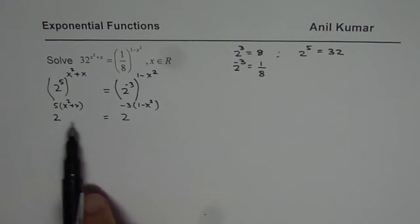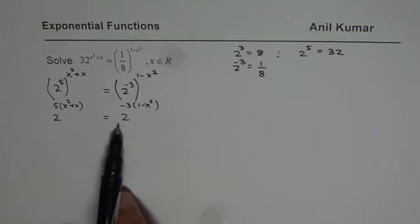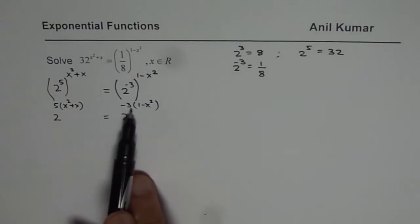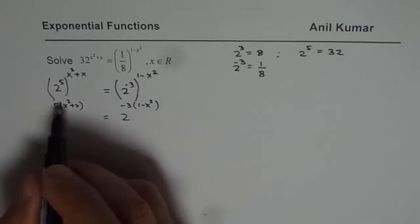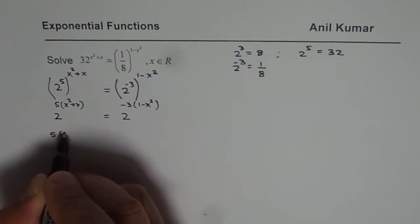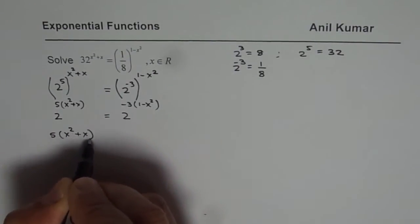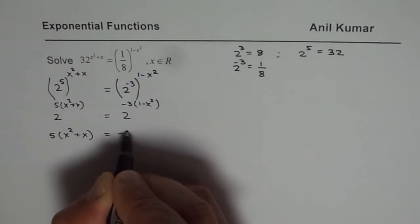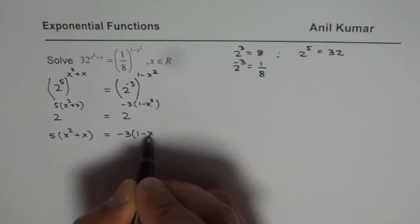Now since we have the same base for this equation to be true, their exponents should also be same. So we have 5 times x square plus x is equal to minus 3 times 1 minus x square.